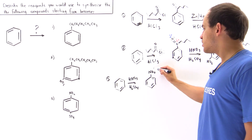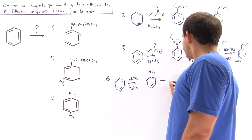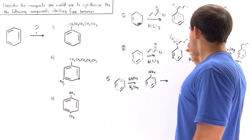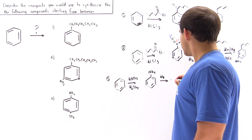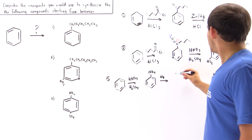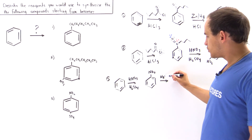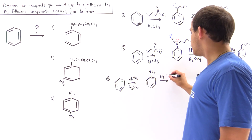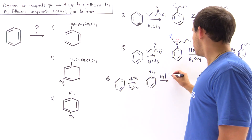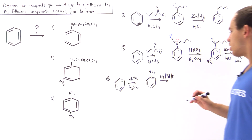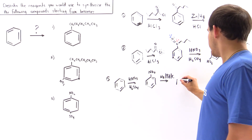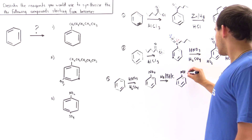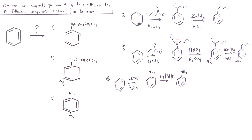We follow a similar reduction pathway to before, but slightly different. Instead of the Clemmensen reduction, we use H2 in the presence of palladium on carbon (Pd/C). This produces an amine group (NH2) attached to the benzene ring.